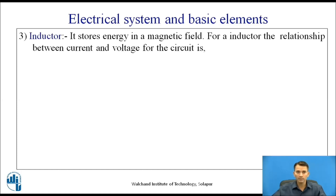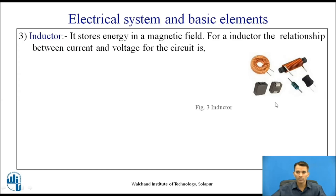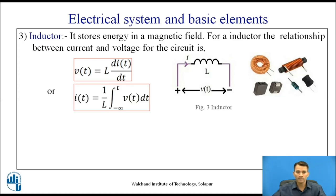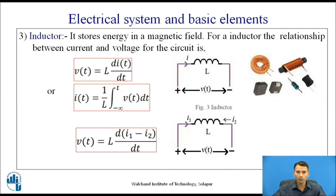The third basic element is the inductor, which stores energy in a magnetic field. For an inductor connected to a source V(t) with current I flowing, the equation between current and voltage is V(t) = L × d/dt [I(t)]. For a circuit with two currents flowing in opposite directions, the equation becomes V(t) = L × d/dt [I1 − I2].